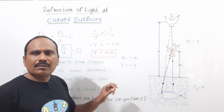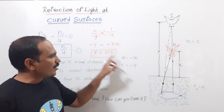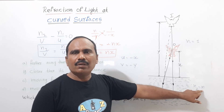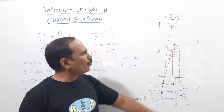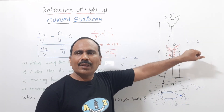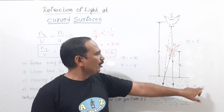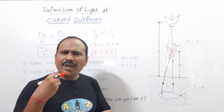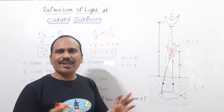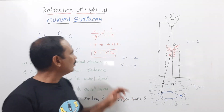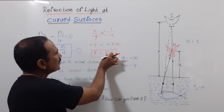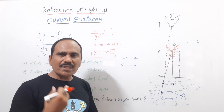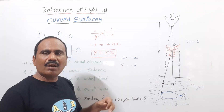Here, n is the refractive index of water, which is greater than 1. So for any value of x other than 0, n times x — which equals y — is always greater than x.